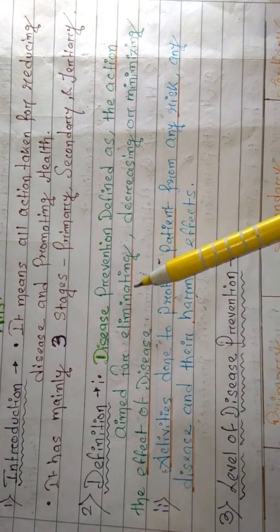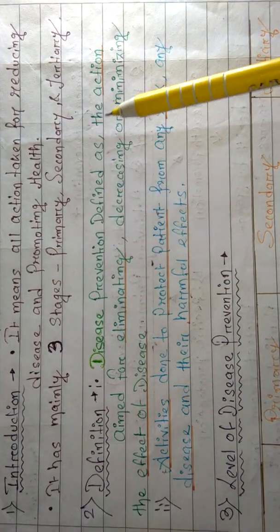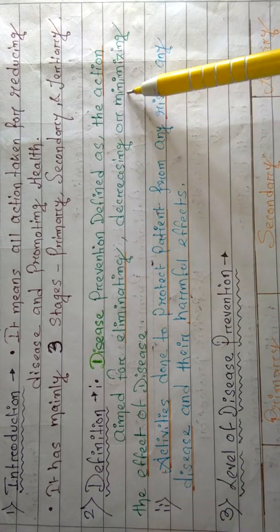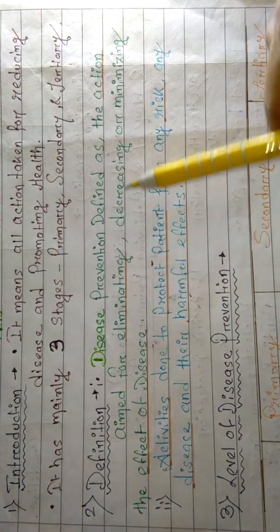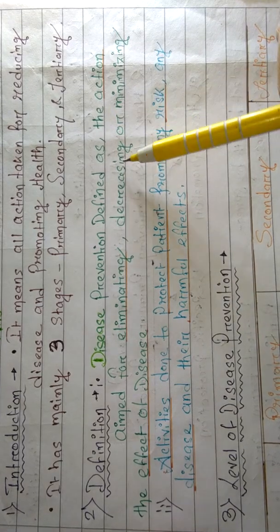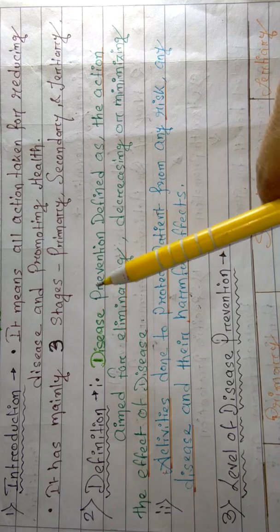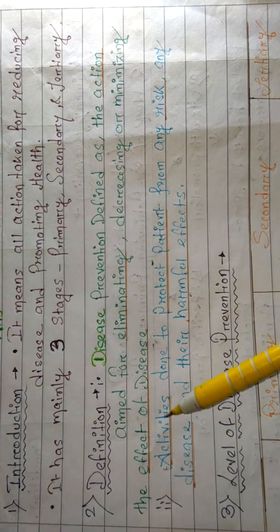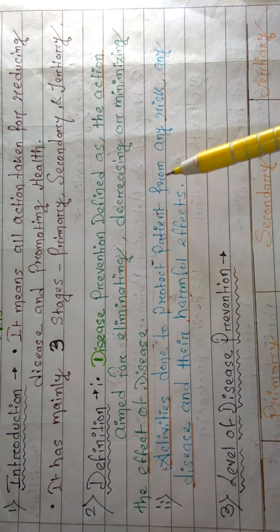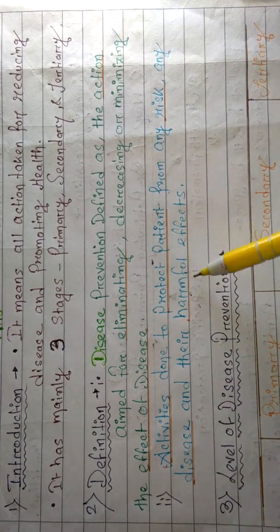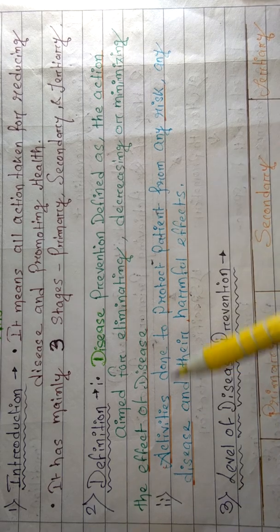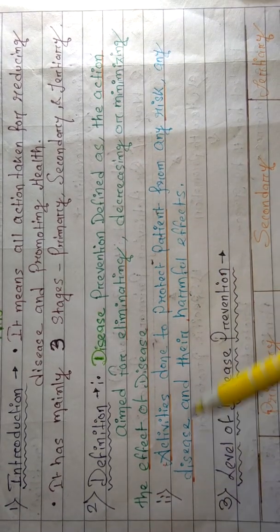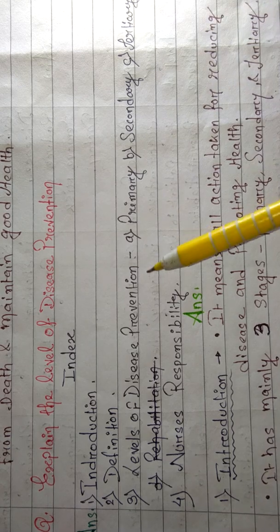Disease prevention is defined as actions aimed at eliminating, decreasing, or minimizing the effects of disease. We eliminate and decrease the signs, symptoms, and problems the patient is facing. You can also write: activities done to protect patients from any risk or disease and their harmful effects. We spread awareness, give health education, and these activities protect the patient from disease and harmful effects. In my next video I will explain the levels of disease prevention.